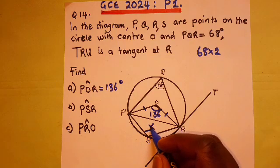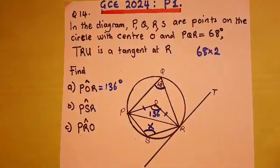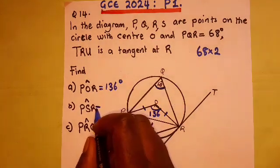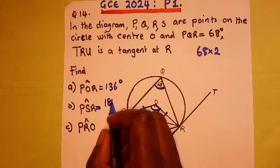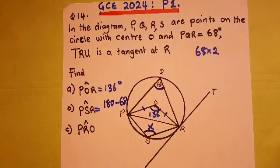So, meaning this angle here, and the one that is here, it should give us 180. So, for this one, it will be 180 minus 68. Those are the rules, ladies and gentlemen.